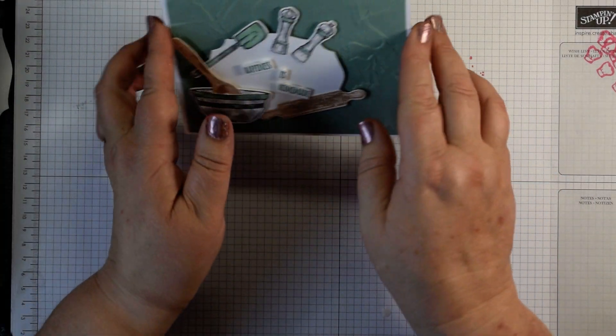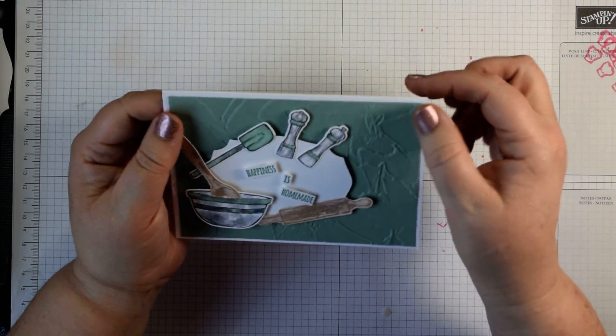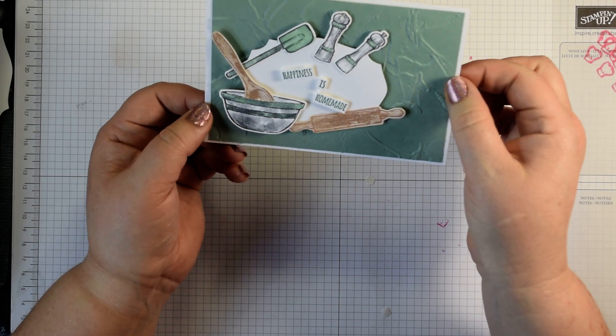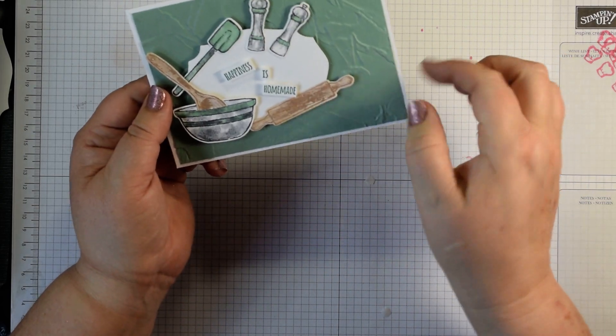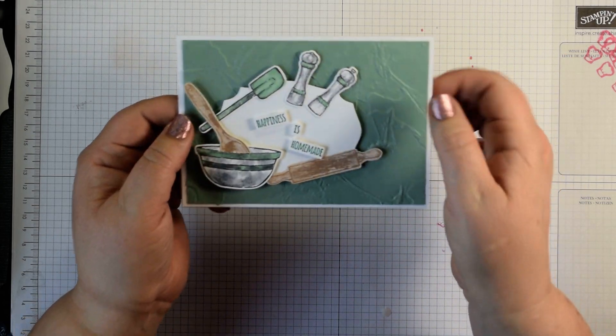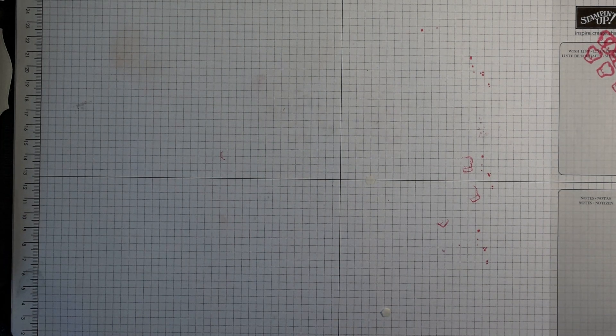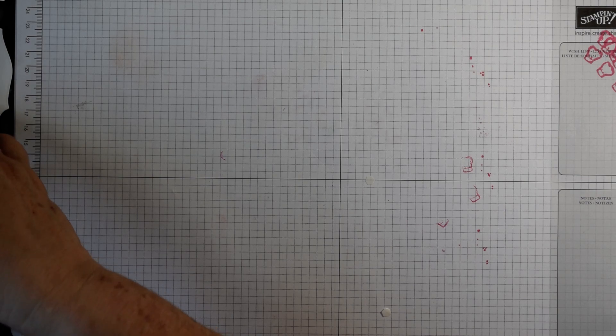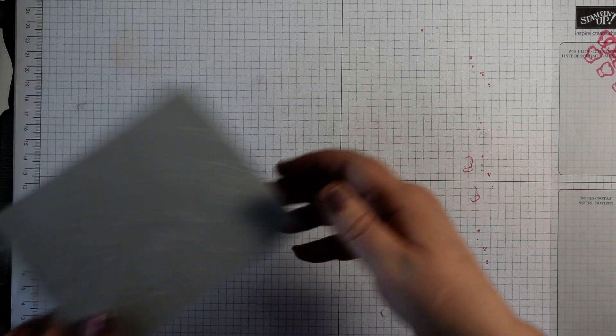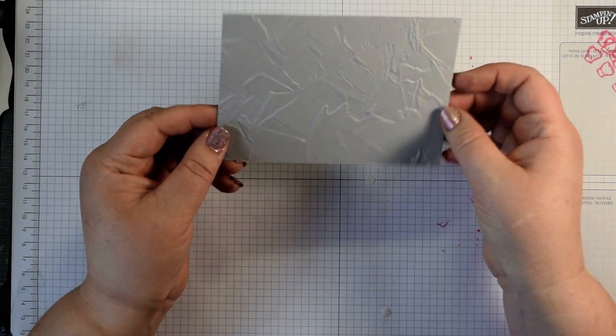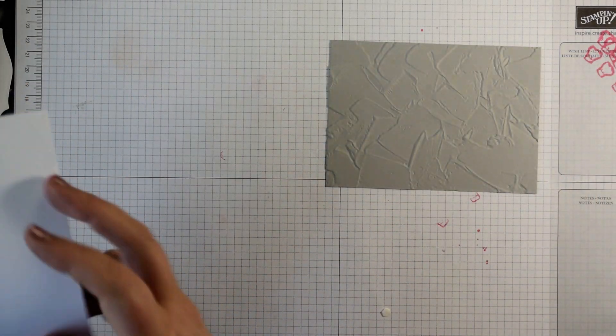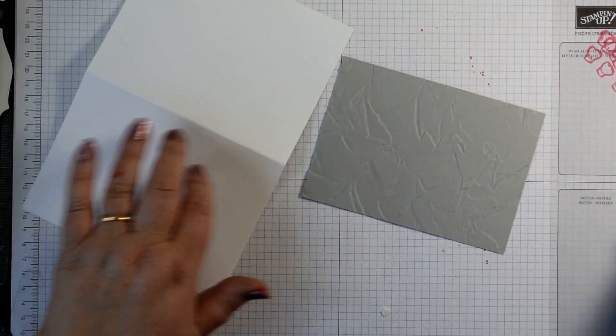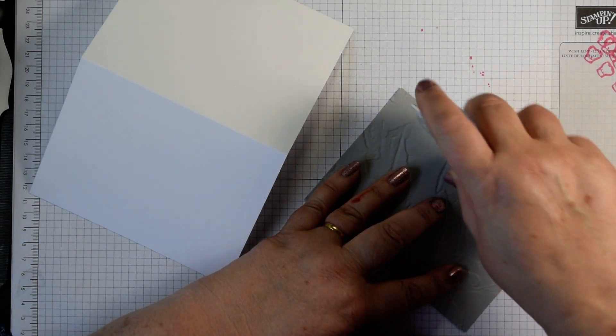This is a standard card base, whichever is your preference, but I've made mine 14 and a half by 21 scored at 10 and a half. The layer that goes on that is 14 by 10 centimeters and I've just popped that through the embossing folder to create our layer. As you can see here you get lots of lovely texture on there, so that's the first thing that I'm going to pop on the front of my card.